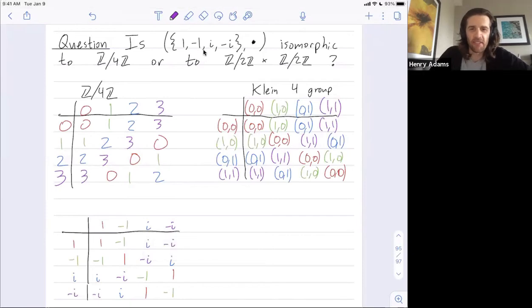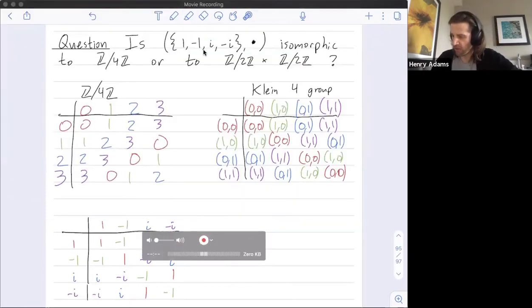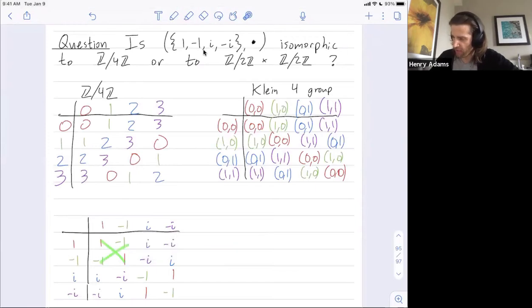You might be tempted to guess the Klein-4 group. It looks a little bit more like the Klein-4 group. But it's not. It's not quite right. You know, you'll notice in the Klein-4 group, it's red all the way down this diagonal. And we don't have that. We have red only part of the way down this diagonal.